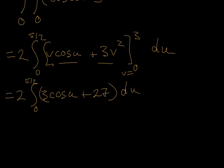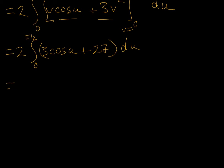And we're going to slide her up here. Equals 2 times... And we have to integrate. The integral of cosine is sine. That's 3 sine of u. Integral of 27 is 27u, and u goes from 0 to pi over 2.